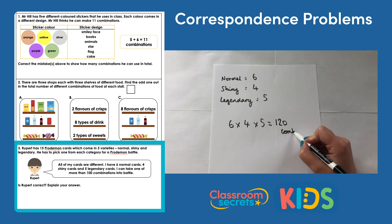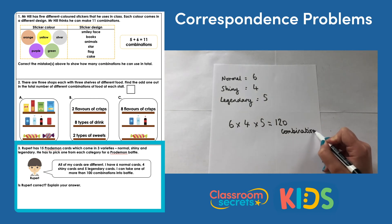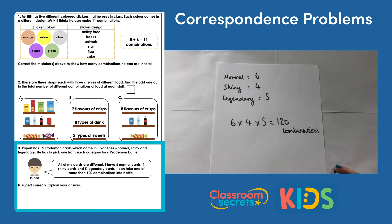Six times four times five: 6 times 4 is 24, and 24 times 5 is 120. So there are actually 120 combinations — each of them different. Is Rupert correct? Yes, Rupert is correct because 6 times 4 times 5 equals 120 combinations, and 120 is more than 100. That was a video explaining the answers to the correspondence problems worksheet from Classroom Secrets. For a video tutorial on the same step, go to kids.classroomsecrets.co.uk. For more worksheets, go to classroomsecrets.co.uk.